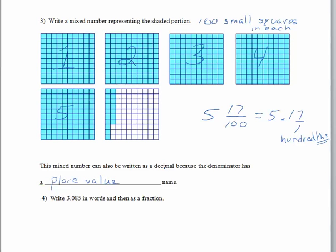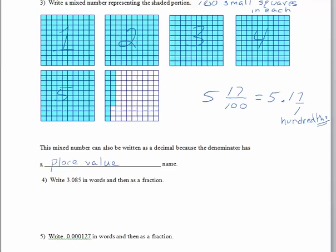If we have a denominator of a thousand, ten thousand, a million, or ten - anything with a place value name in the denominator - we can easily convert it to a decimal. Let's try some examples.